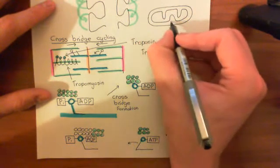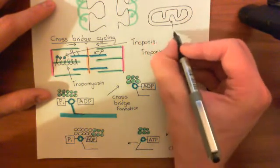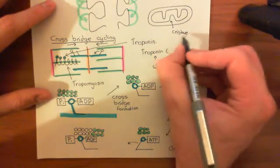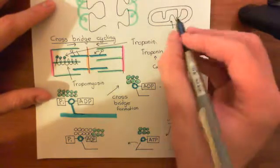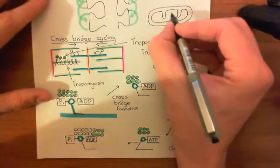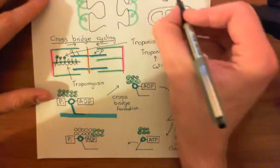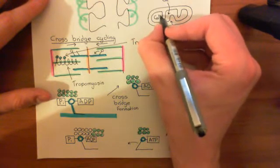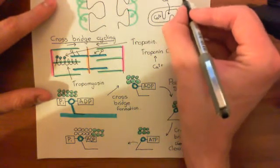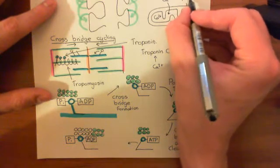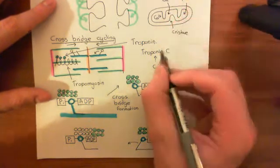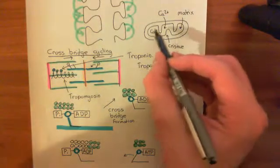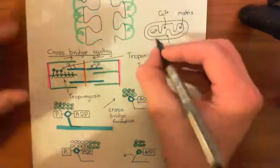Mitochondria have these invaginations of the inner membrane inwards, which are known as cristae. Basically, when the calcium goes up in the cytoplasm, it's also going to lead to calcium going up in the matrix of the mitochondria — the space within the centre of the mitochondria, known as the mitochondrial matrix. The effect of that calcium going up in the mitochondrial matrix is that the rate of respiration is going to go up.